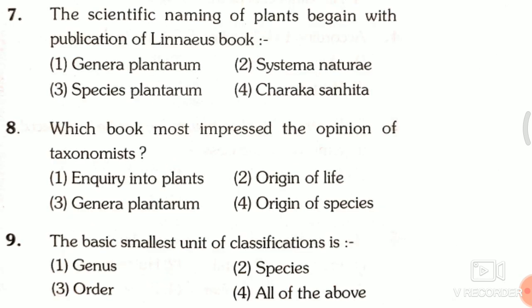Question 7: The scientific naming of plants began with the publication of Linnaeus's book — first, Genera Plantarum; second, Systema Naturae; third, Species Plantarum; fourth, Charaka Samhita. The answer is the third one, that is Species Plantarum.